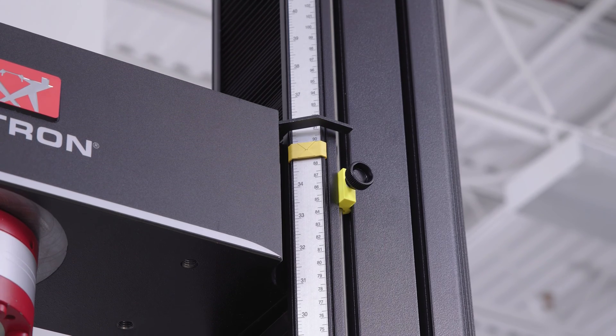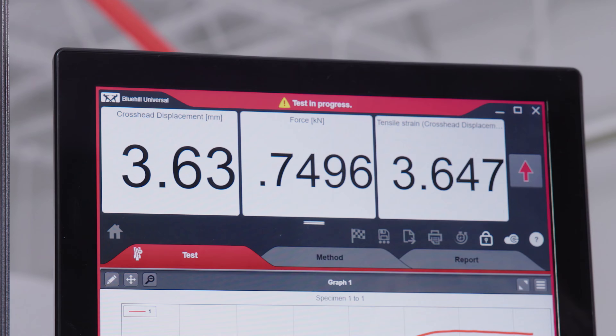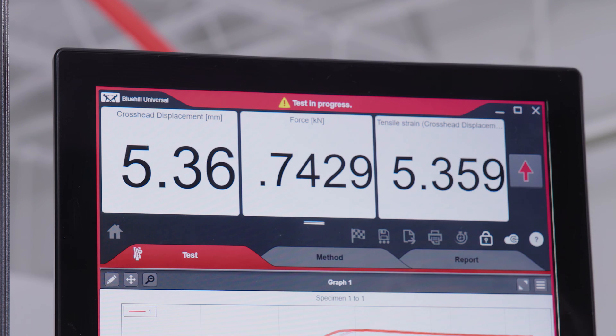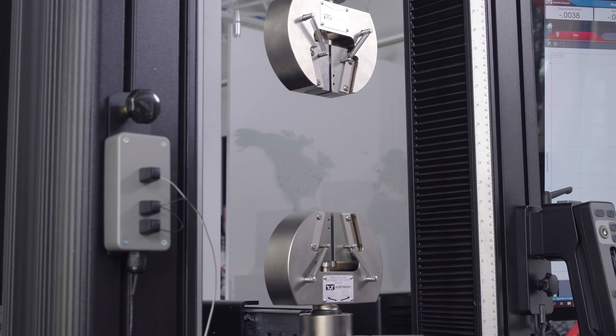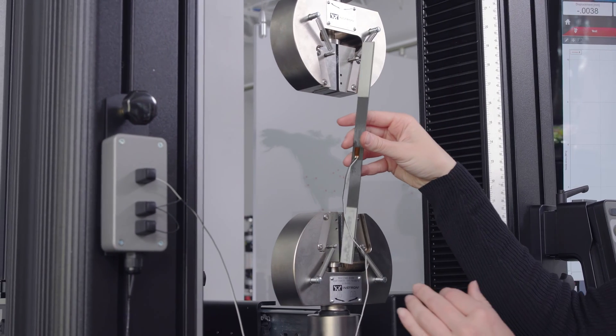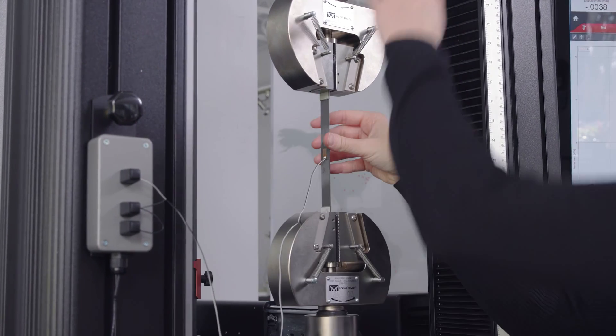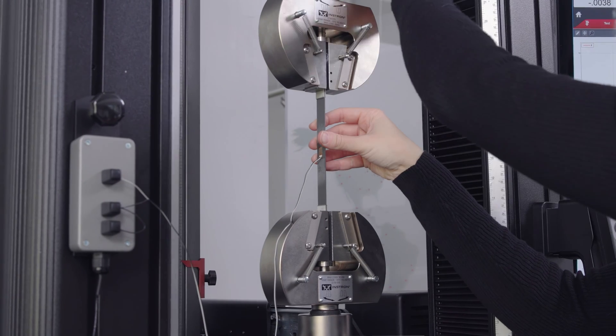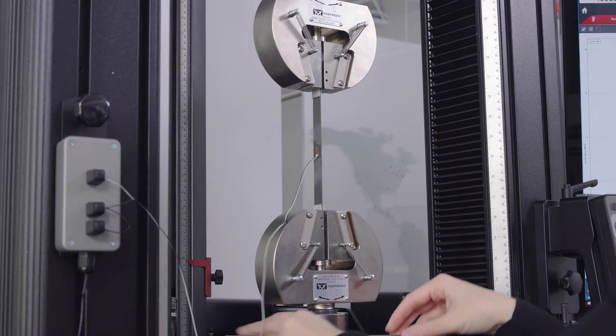In some cases, crosshead displacement is an acceptable means of calculating strain based on initial specimen length. In cases where crosshead displacement is not accepted by a testing standard, strain must be calculated with a measurement device focused on specimen displacement only.